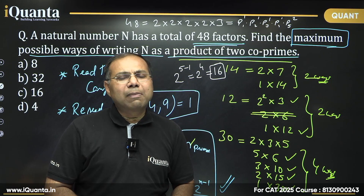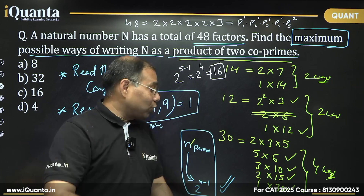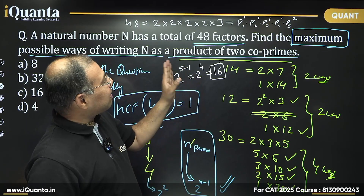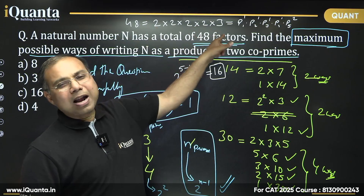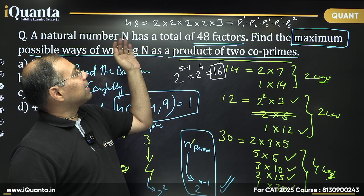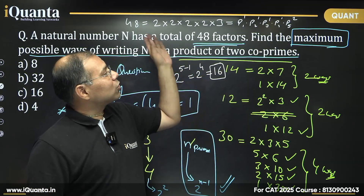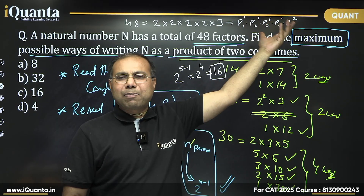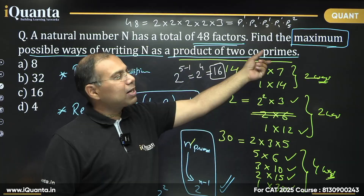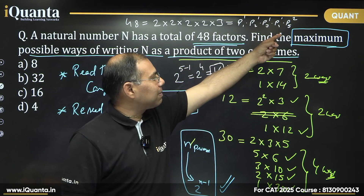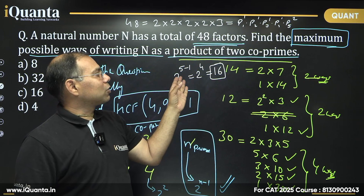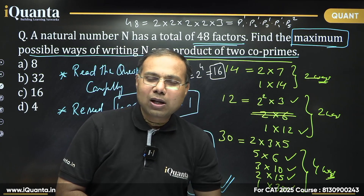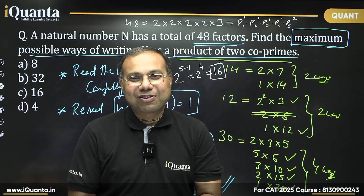We applied this shortcut here: the reverse factorization of 48 showed a maximum of 5 distinct prime numbers is possible, so the answer is 2^(5−1) = 2⁴ = 16. Next time you see a similar question, you can directly apply 2^(n−1) — that's the advantage. Thank you very much; we shall meet again with another conceptual session. Thank you.